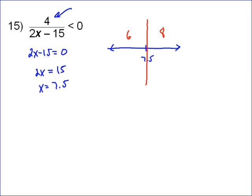Now, it's possible neither one do, and it's possible that both do, but it's probable that only one of the two do. So if we put in 6, we get 4 over 12 minus 15. Well, yeah, that's a negative number, 4 over negative 3, which is less than zero, so that's good.